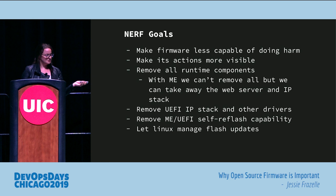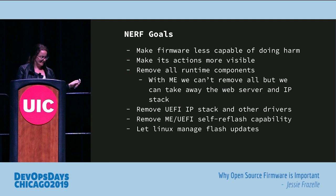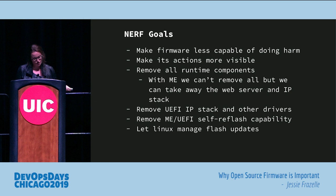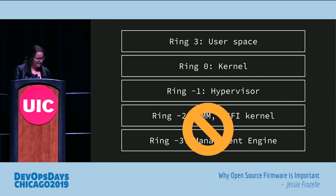Remove all the runtime components. With the management engine you can't remove all of it, but you can take away the web server and IP stack — because who needs those? Remove the UEFI IP stack. Remove the ability to self-flash firmware, which seems super harmful, and let Linux manage all the flash updates instead. Most people run Linux anyway, so that kernel should already be vetted.